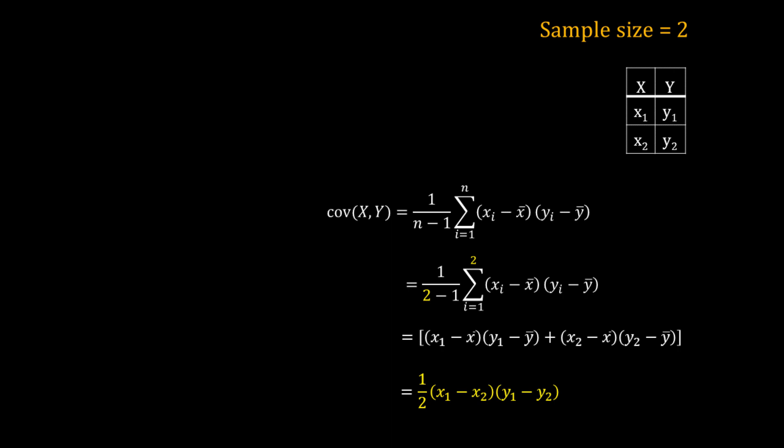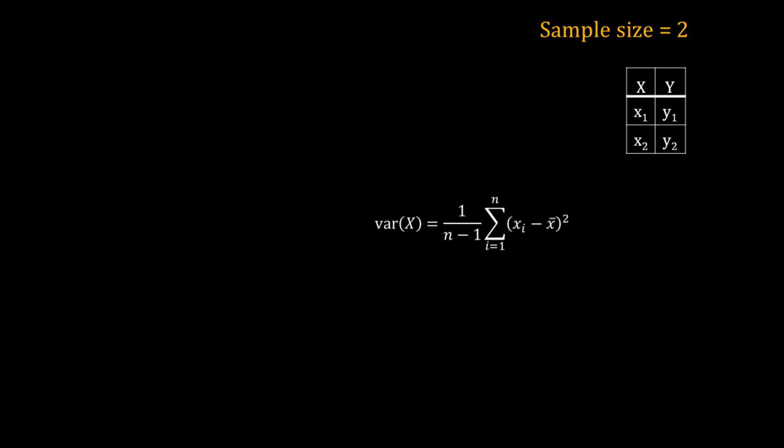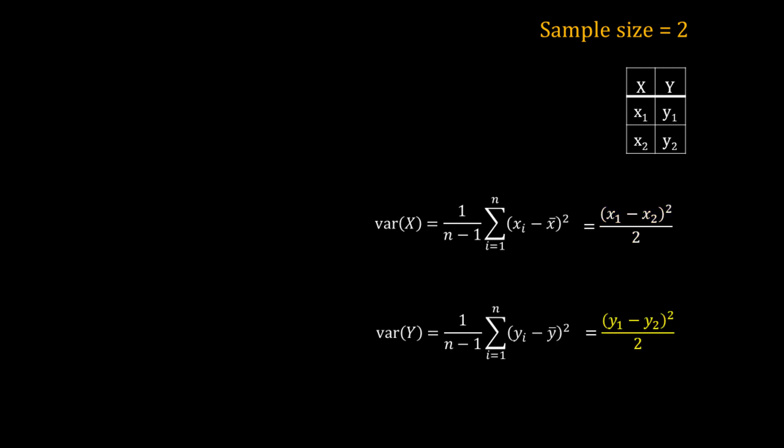Now I will calculate the variances. The variance of x is equal to 1 over n minus 1 into the summation of (xi minus x-bar) squared. Replacing x-bar by (x1 plus x2) over 2 and expanding the summation, I get variance of x equal to (x1 minus x2) squared divided by 2. Similarly, variance of y equals (y1 minus y2) squared divided by 2.